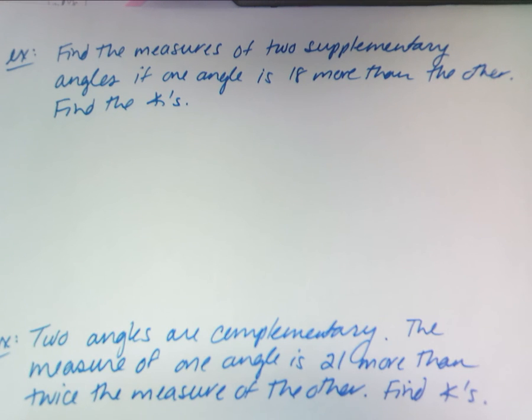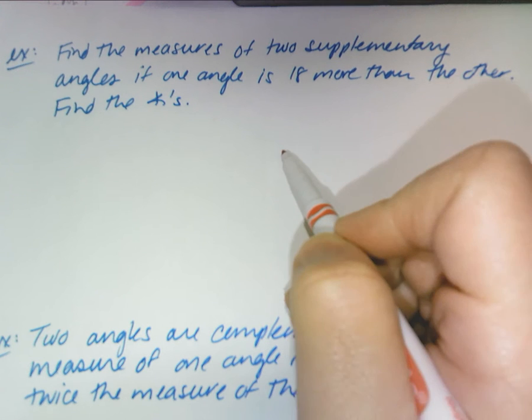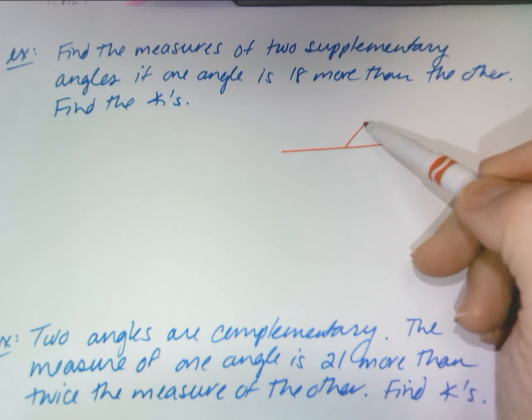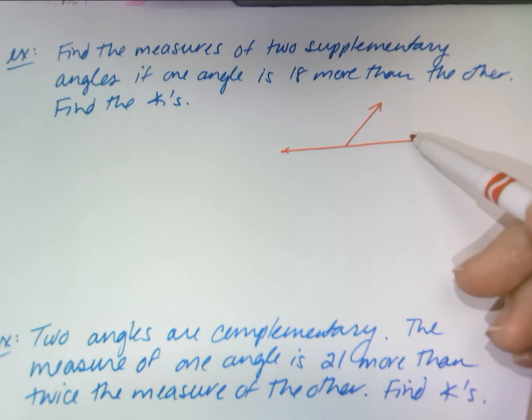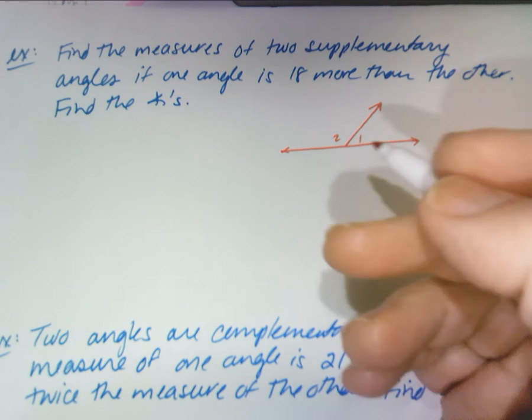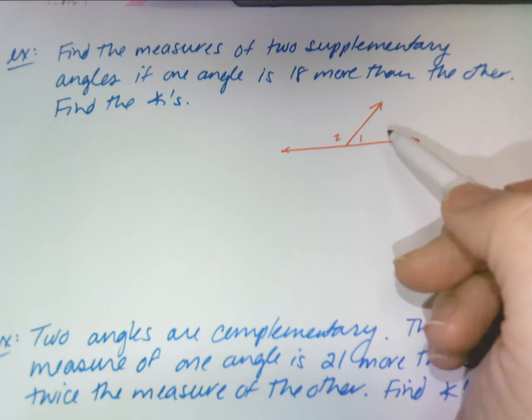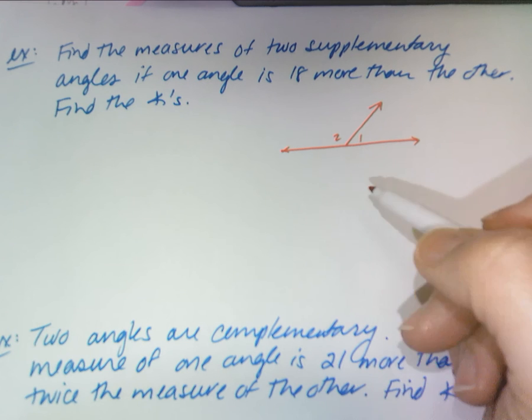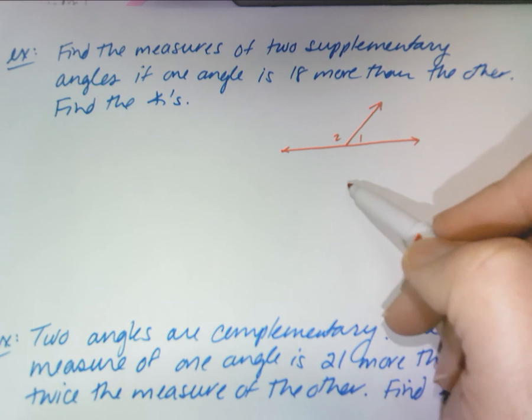So again, we know that if you're supplementary, you add to 180. You have angle one and angle two here. What you can do is actually assign them a letter. You should remember this from algebra one.